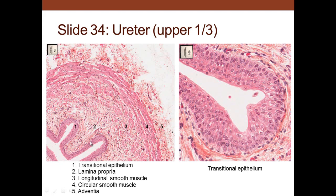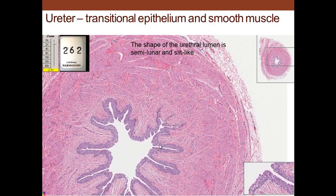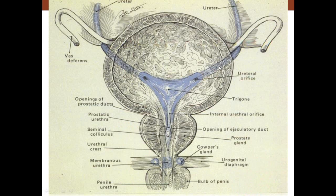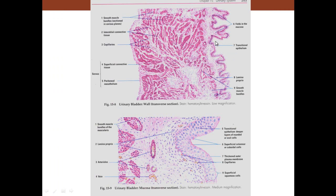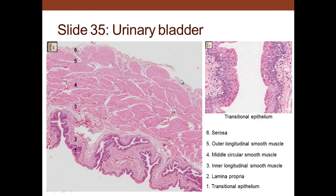Here we can see the ureter with transitional epithelium, lamina propria, and two layers of smooth muscle. There is an adventitia because you don't want the ureters sliding back and forth. The ureter has a scallop-like, slit-like shape with muscle bundles and an adventitial capsule around it. From the ureters, you go to the urinary bladder, then to the urethra, through the prostatic urethra, and then to the penile urethra in the male. Here we see the transitional epithelium and lots of smooth muscle of the urinary bladder.